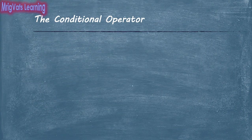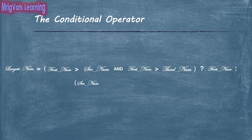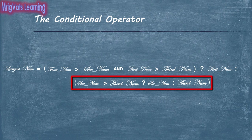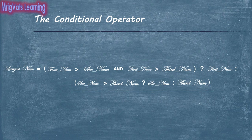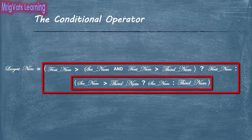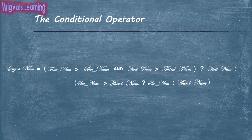You can also get the same result by modifying the expression as: largestNum = firstNum > secondNum && firstNum > thirdNum ? firstNum : secondNum > thirdNum ? secondNum : thirdNum, where you use the conditional operator only for the third operand. Using a conditional operator within a conditional operator is known as nesting. However, you must consider that the more you use nesting for the conditional operator, the greater the elements of confusion.